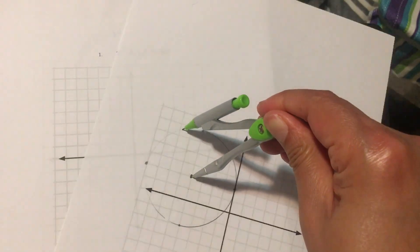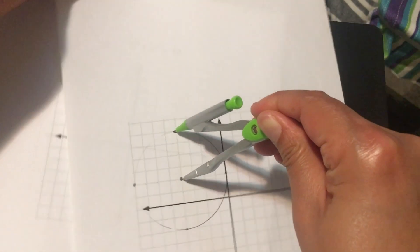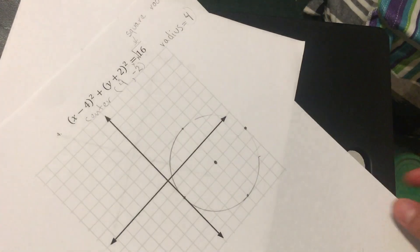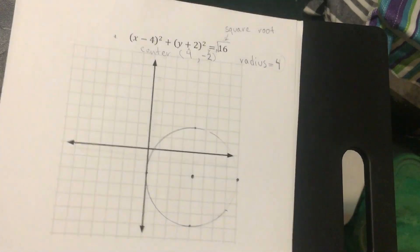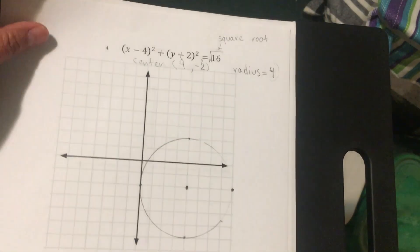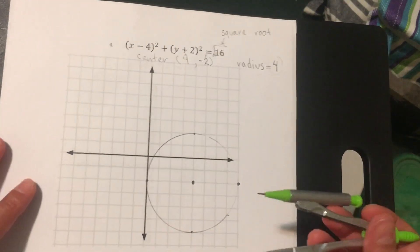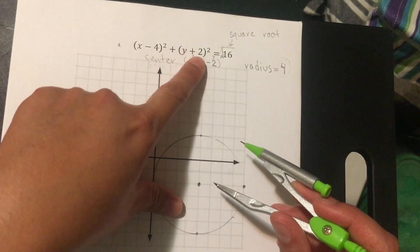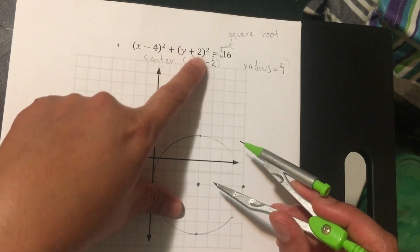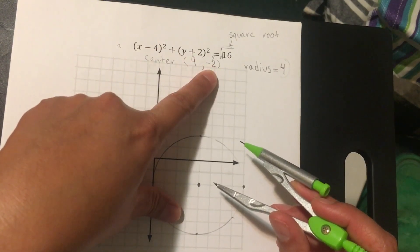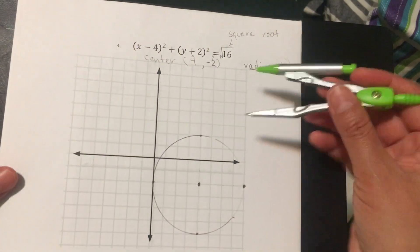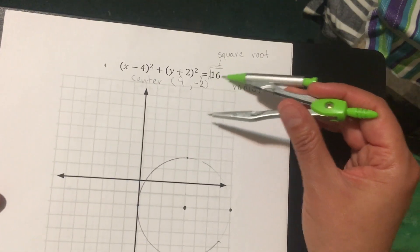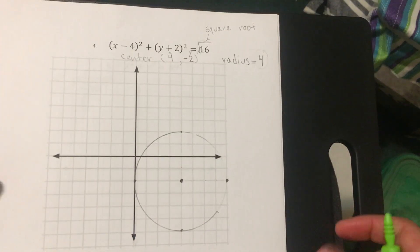The center is the opposite of what you're adding or subtracting inside the parentheses, and for the radius you just take the square root of the answer on the right side of the equation.